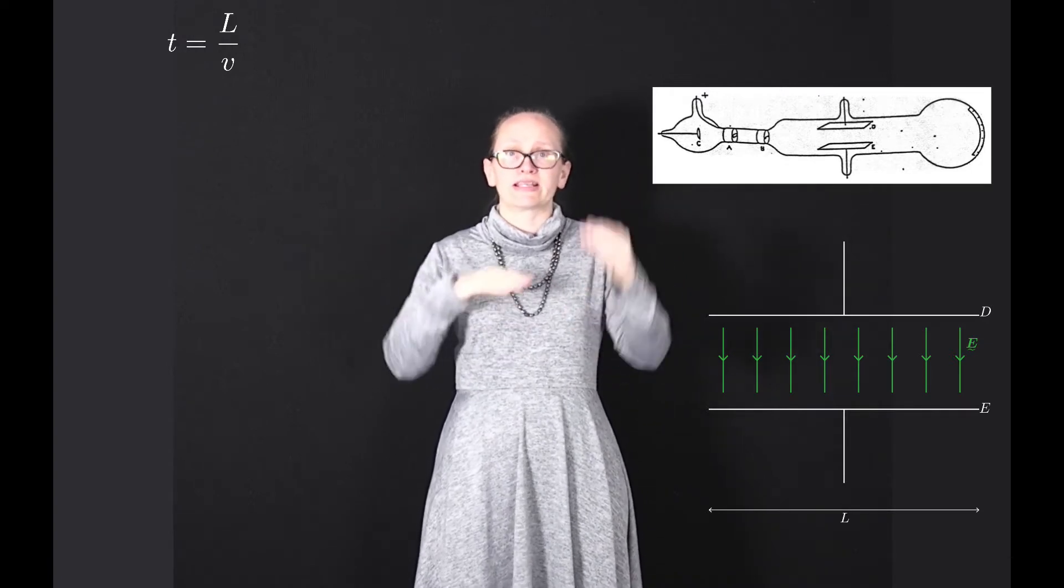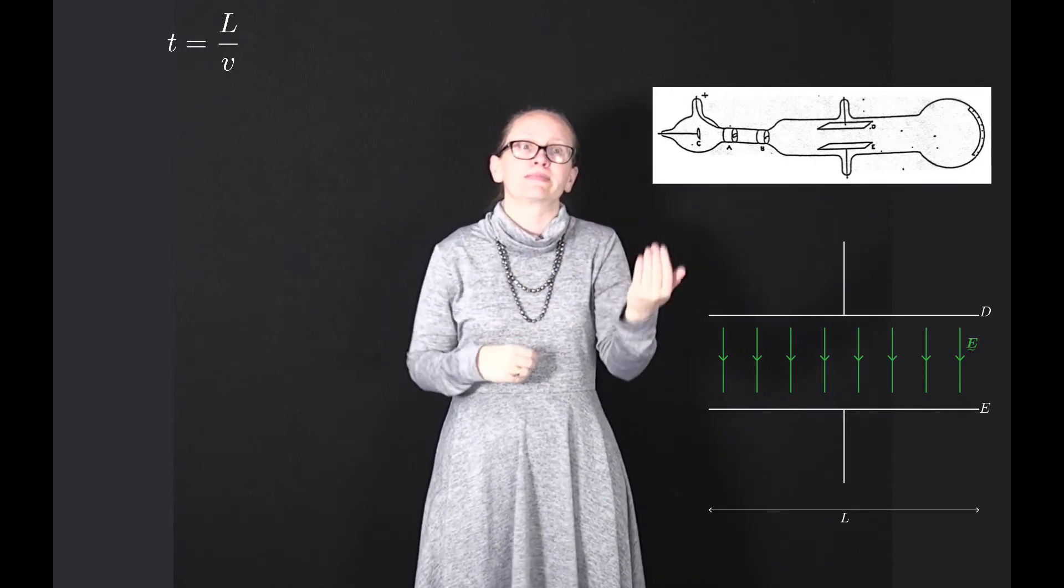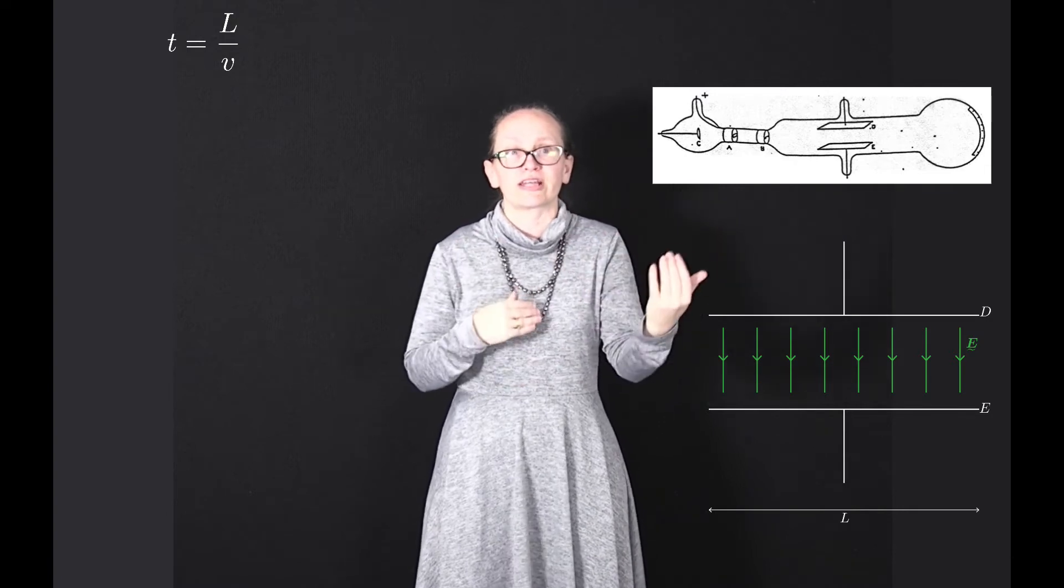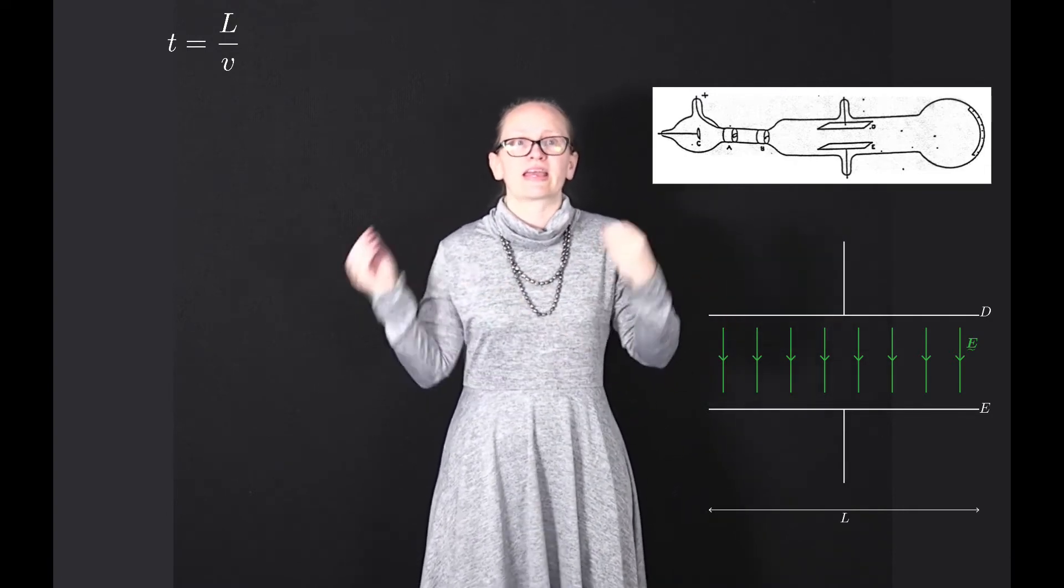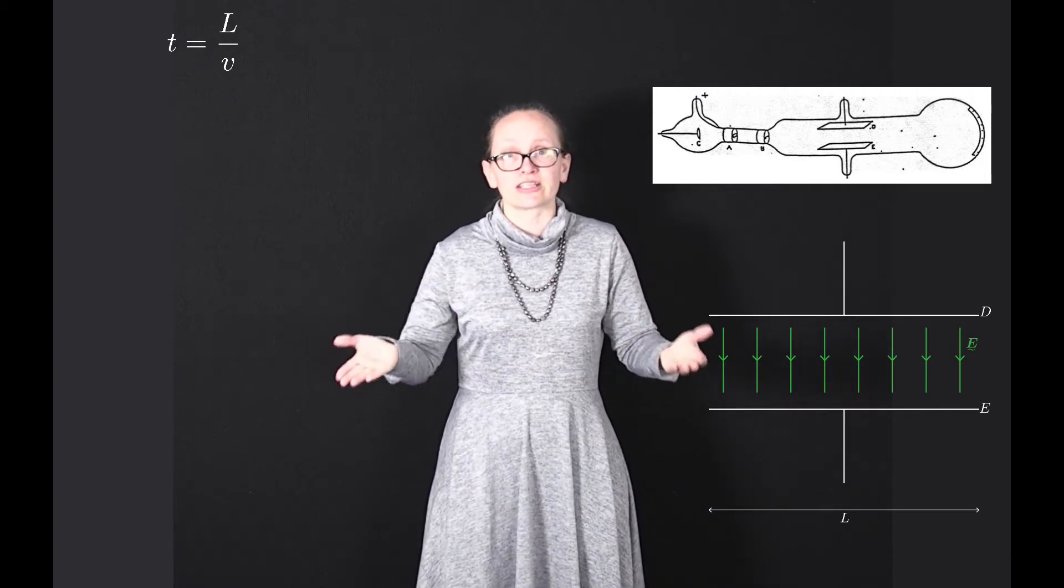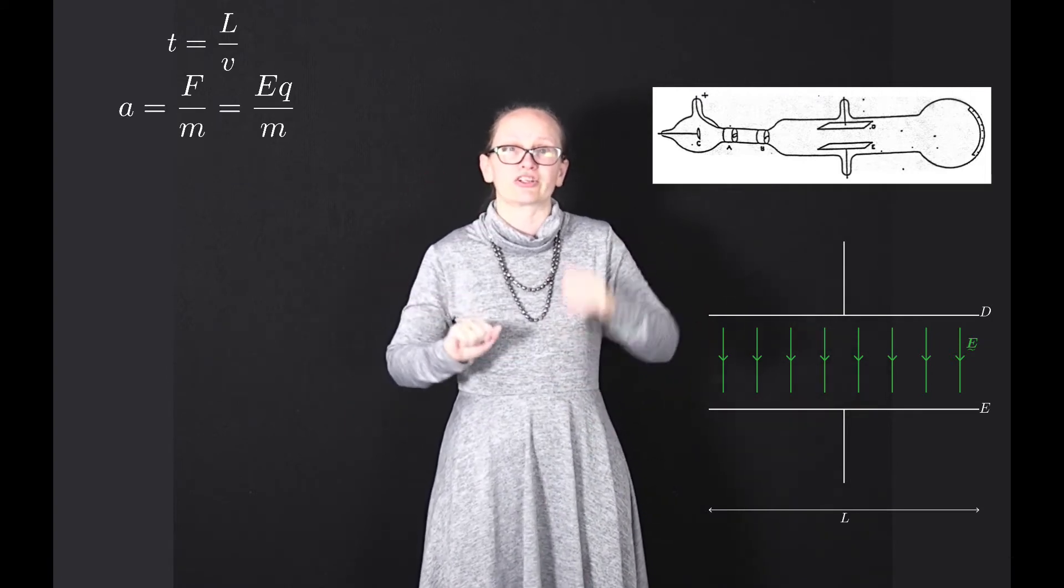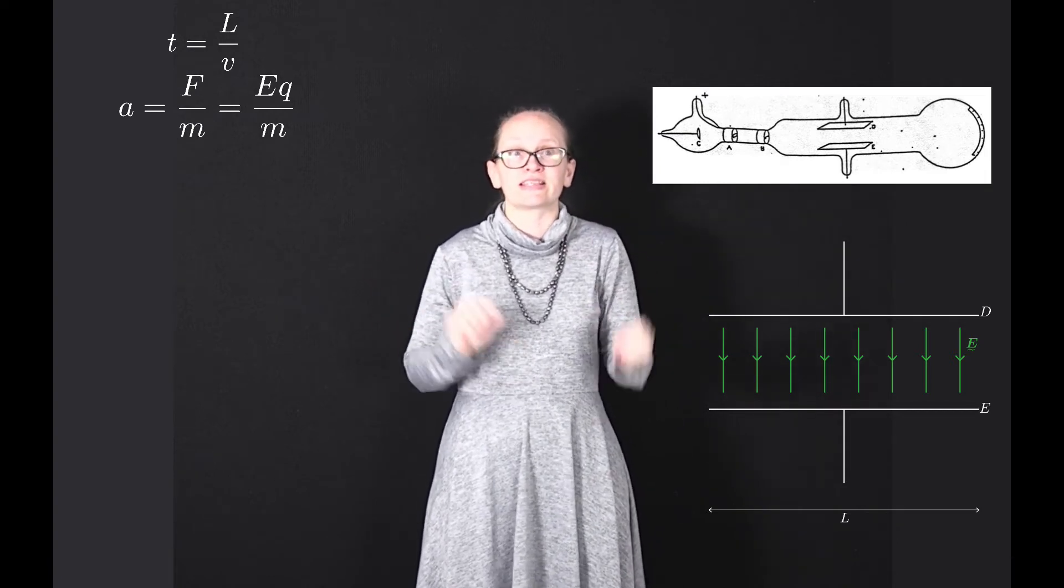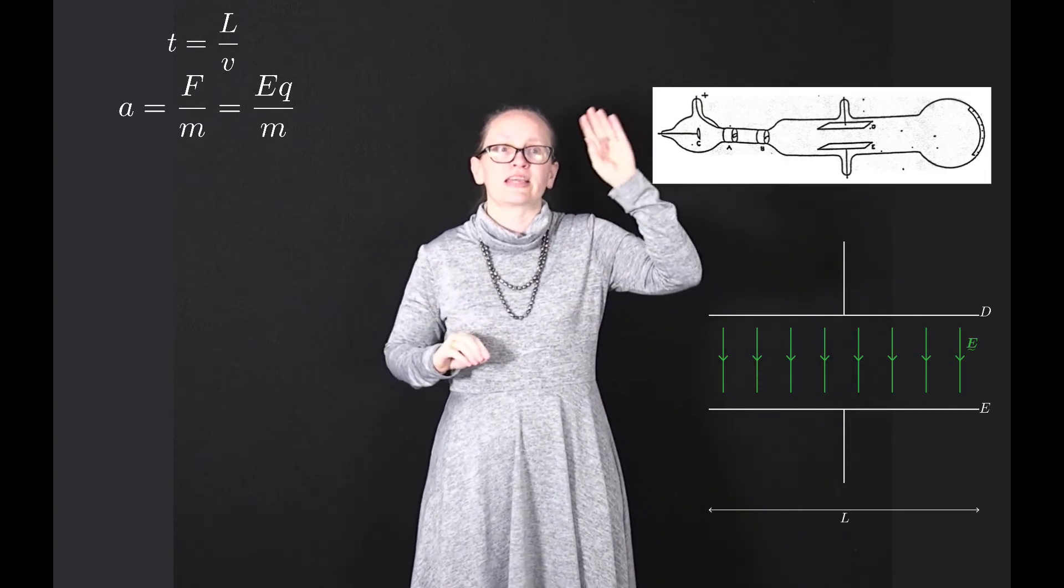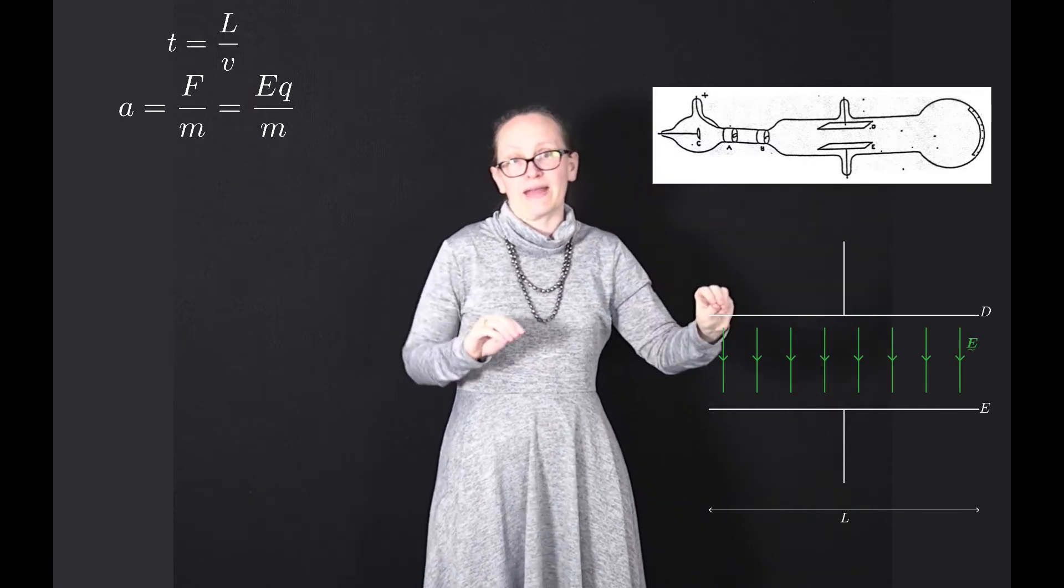While the cathode rays are between those plates, they are experiencing a force due to that electric field. Because they are experiencing a force, they are accelerating. Using Newton's second law, we can write that the acceleration equals the force divided by the mass. The force in this case is the electric force, so this equals Eq divided by m.